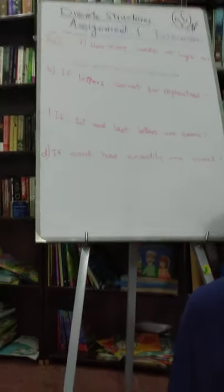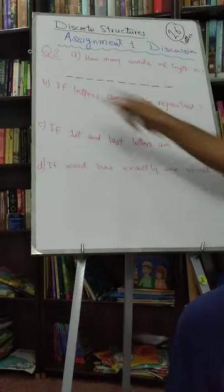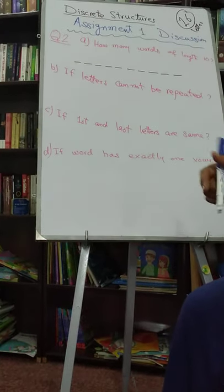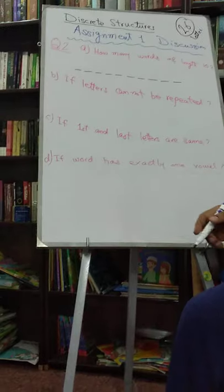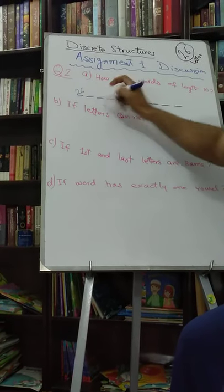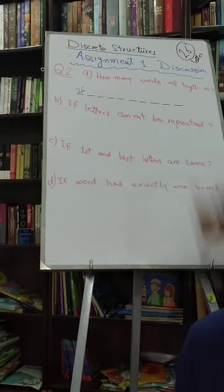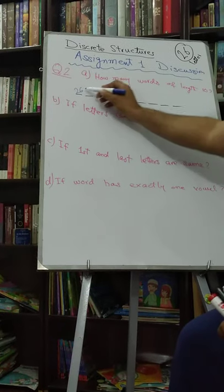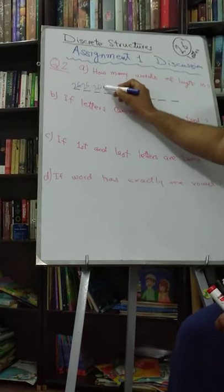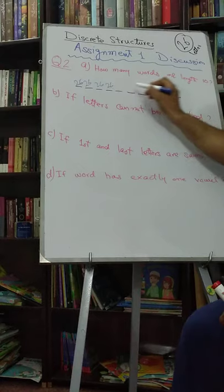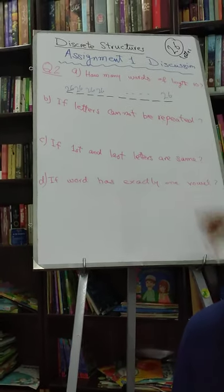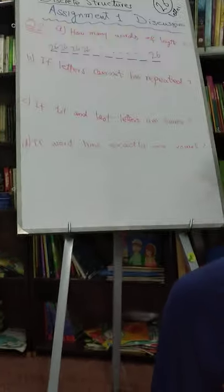So for the very first letter, how many choices we have? 26 — we can have any letter out of 26. For the second letter, how many choices we have? Again 26. For the third, again 26. For the fourth, again 26. And till the last, we have again 26, so all these choices get multiplied.